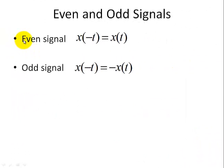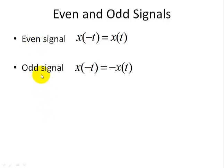You may ask, why is it important to know the difference between an even and odd signal and their definitions? Well, when it comes to calculating Fourier coefficients, it can save you a lot of time. Because if a signal is already composed of only an even signal, there's no need to calculate the odd signal. And if the signal is an odd function, then there's no way it can be composed of even signals such as a cosine, so you don't have to calculate those coefficients.